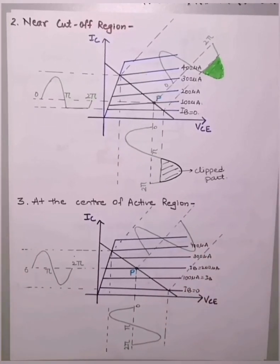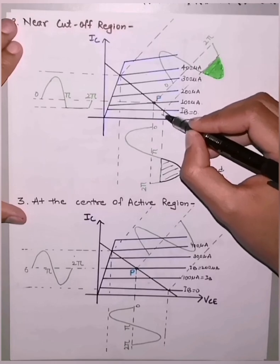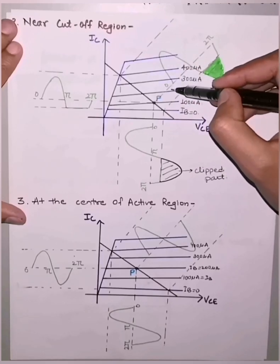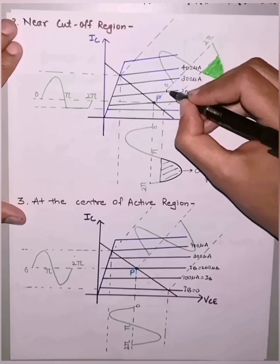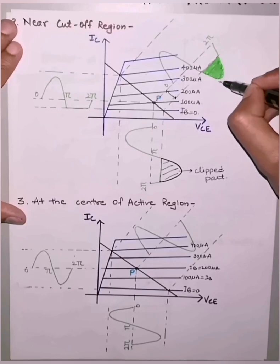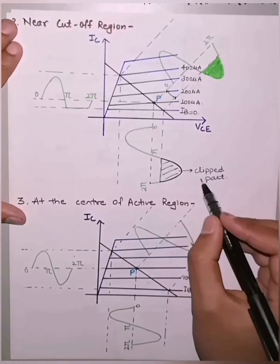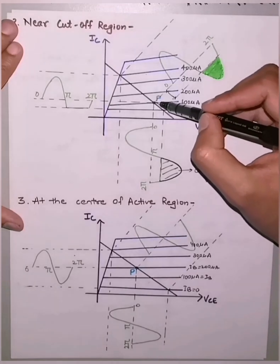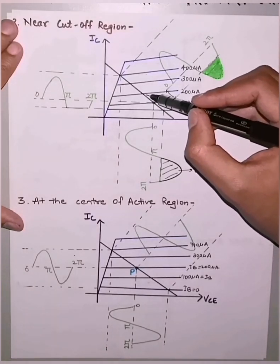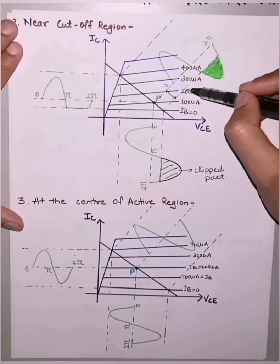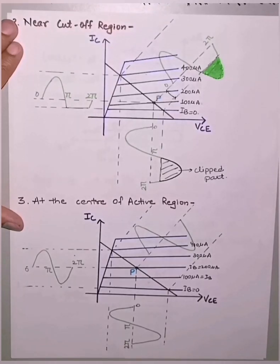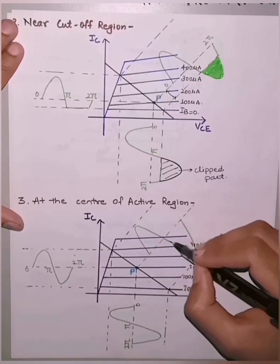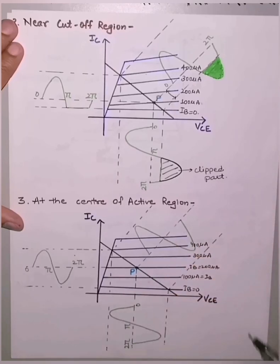If the Q point is near the cutoff region, we can have a large positive amplitude swing, but the negative part is limited by the width of the active region below the Q point — any signal exceeding that amplitude will be clipped. Therefore, for amplification, the Q point should be placed at the center of the active region, so that equal magnitudes are available for both positive and negative swings, allowing higher input signals without clipping at the output.